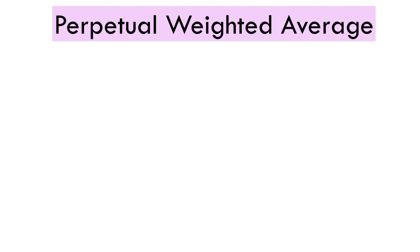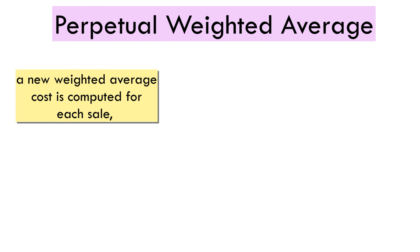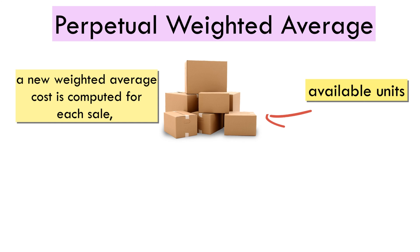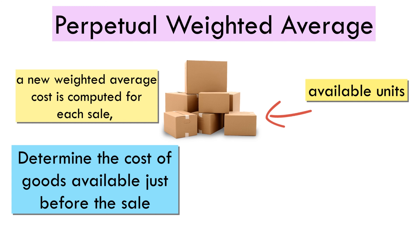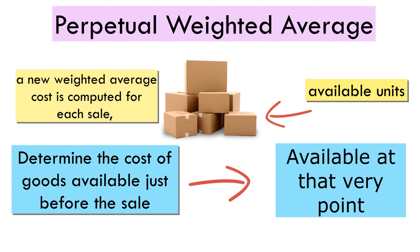As for perpetual weighted average, a new weighted average cost is computed for each sale based on the number of units available for sale at that time. To calculate the unit cost, determine the cost of goods available just before the sale and divide by the units available at that very point. Once you get this, value the units sold using this average cost.